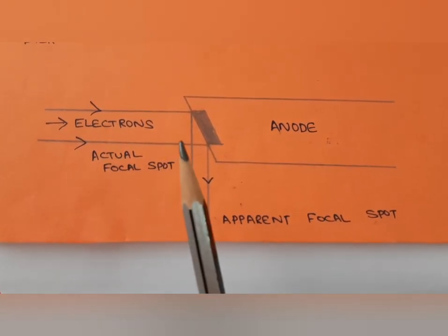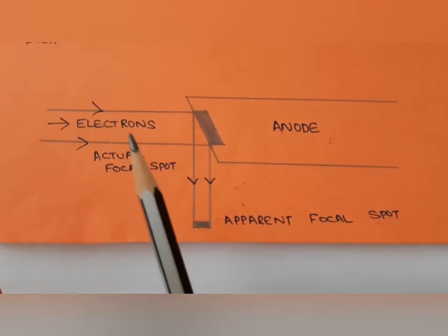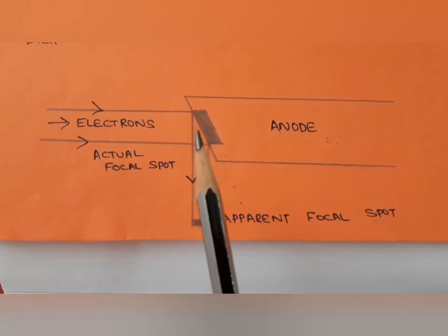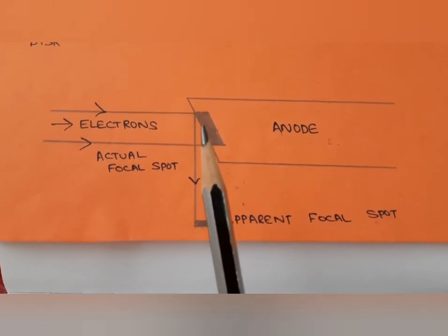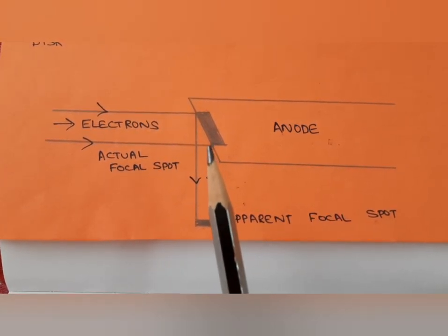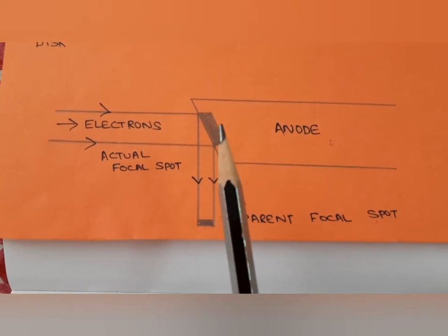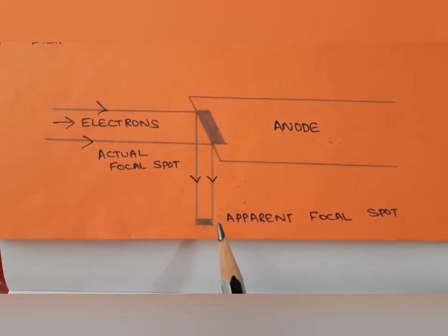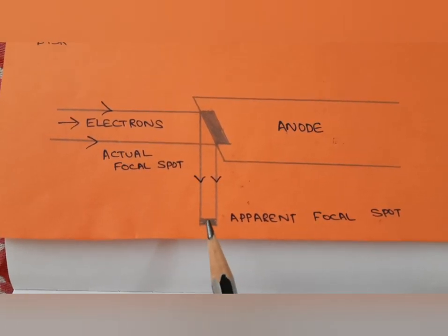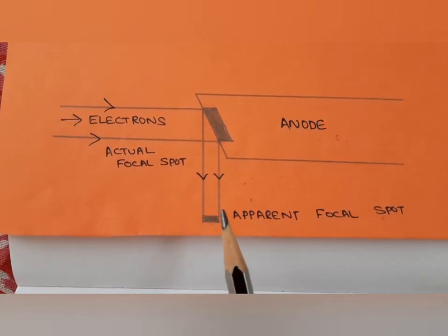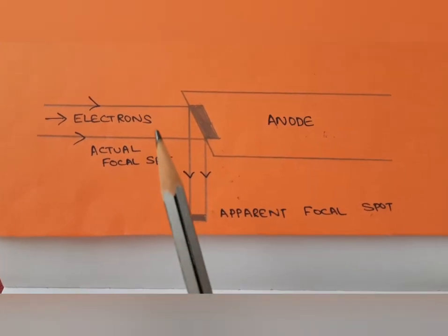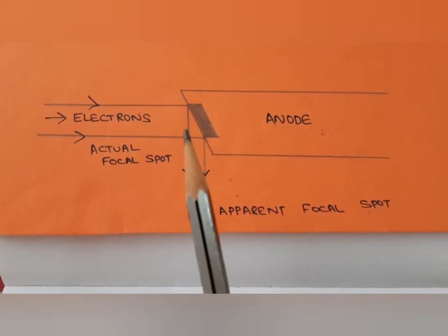If we give a tilt of 10 to 15 degrees, the area for electron bombardment increases, providing a greater area for heat to spread. At the same time, it gives a point source of radiation, which reduces the penumbra effect or shadowing effect and produces sharper images.